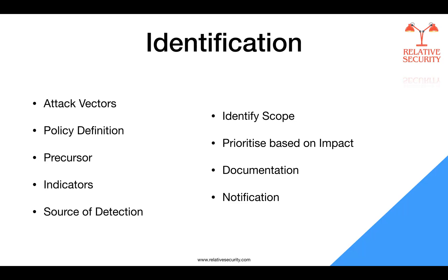When it comes to the scope of the incident, determining the scope of the security event and documenting relevant evidence is a very critical step in the incident response process. Scope identification involves understanding the extent and impact of the incident on an organization's systems, networks, and data. The incident response team may employ methods such as network analysis — analyzing network traffic to identify pathways and systems affected — examining system logs, artifacts, and forensic evidence, and leveraging EDR solutions to investigate activities on individual endpoints.